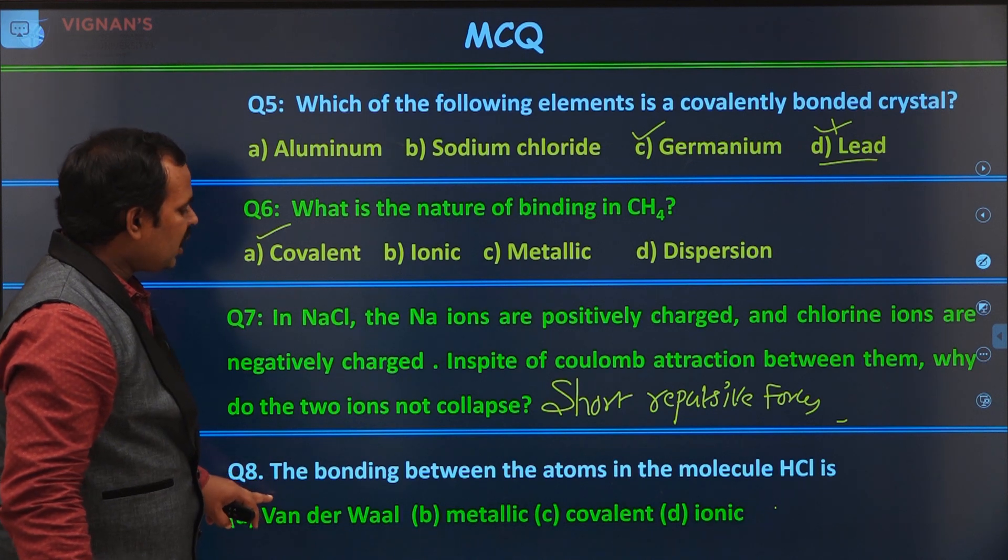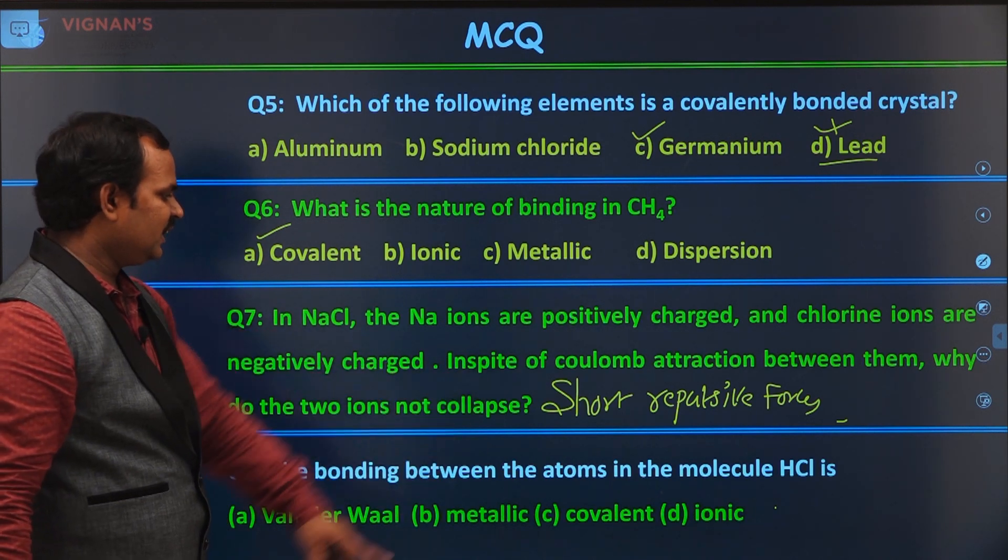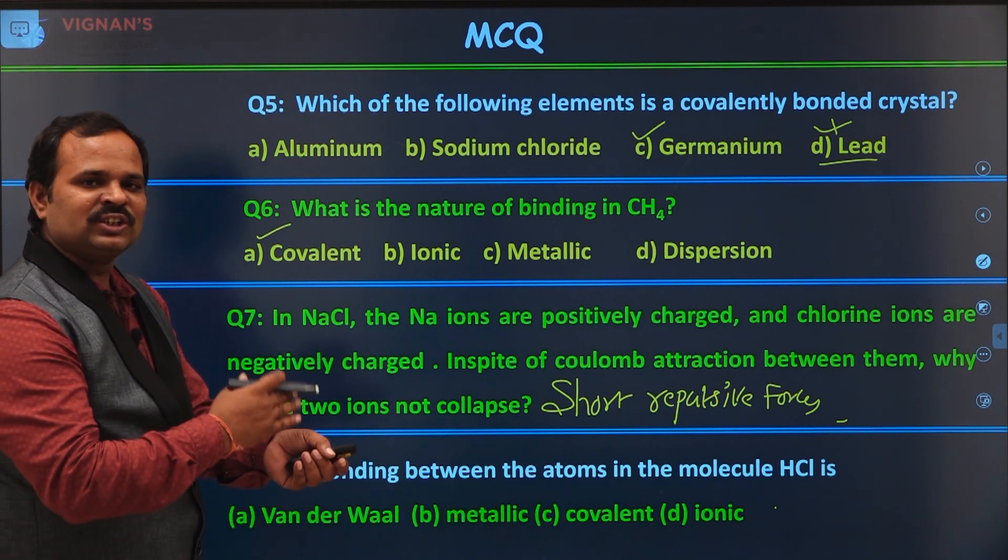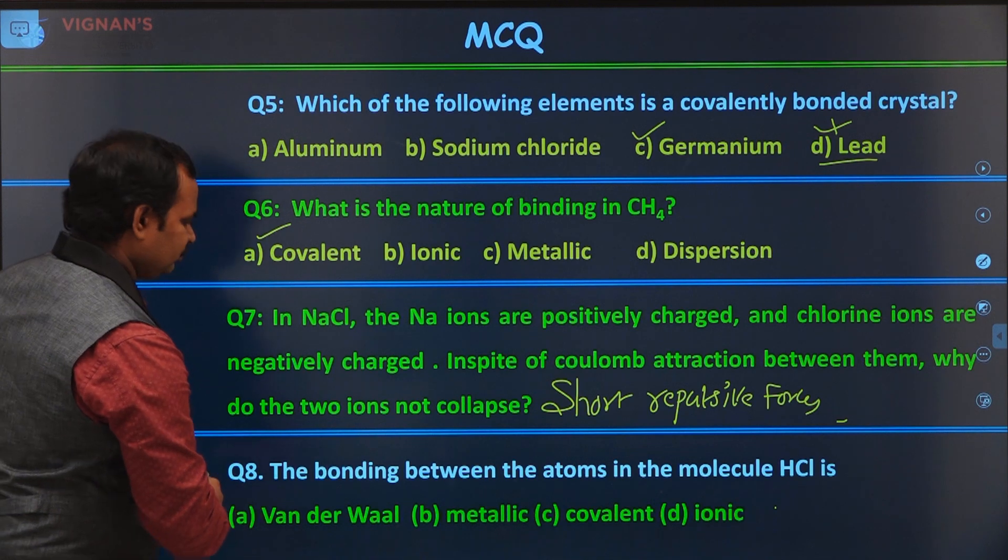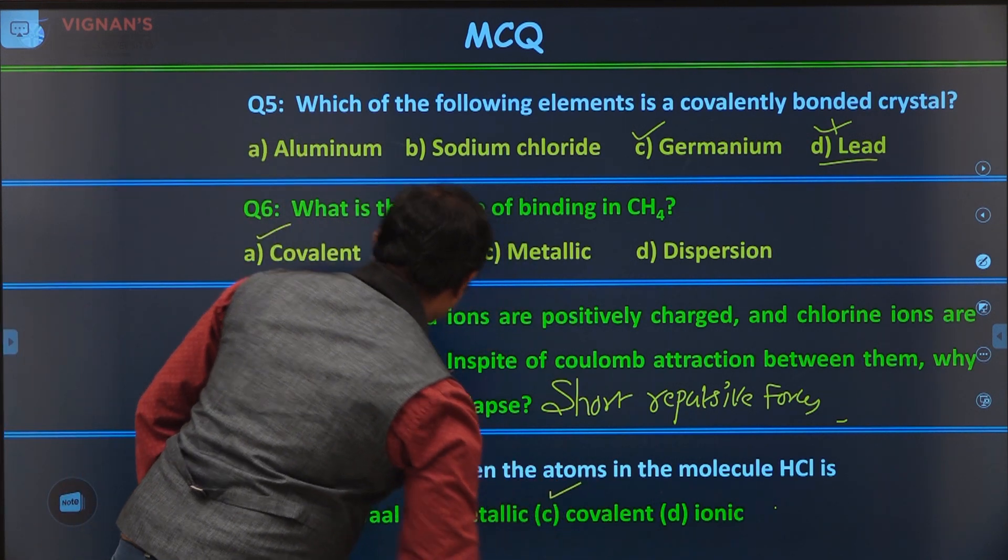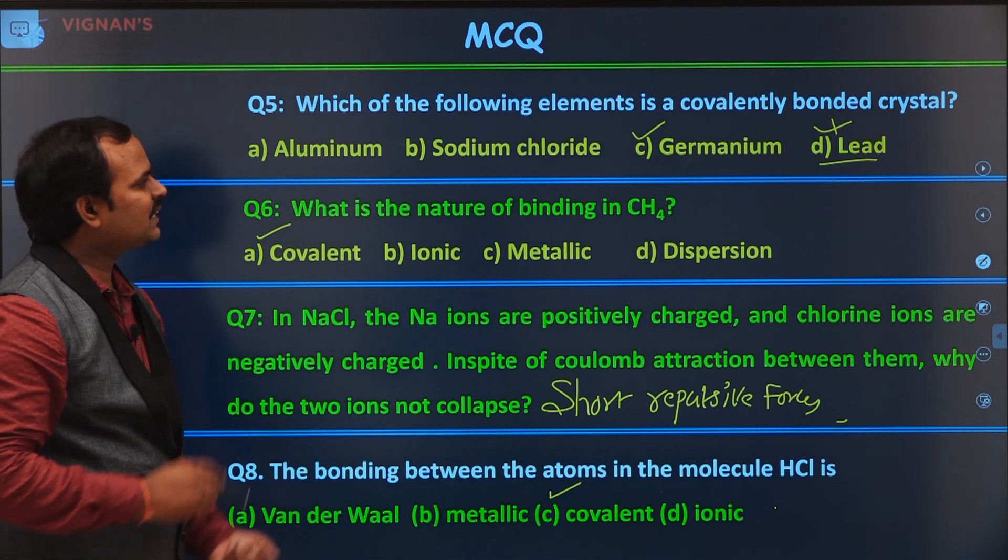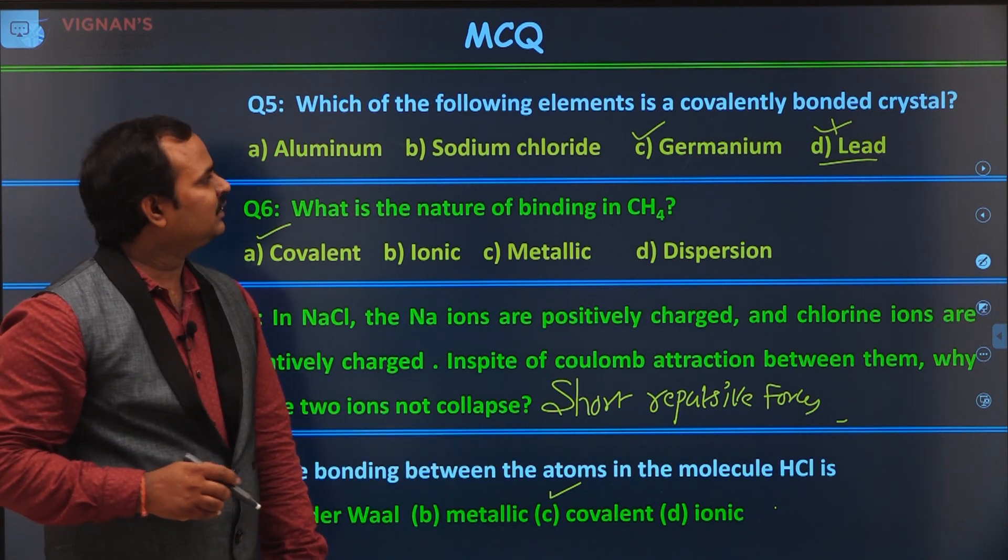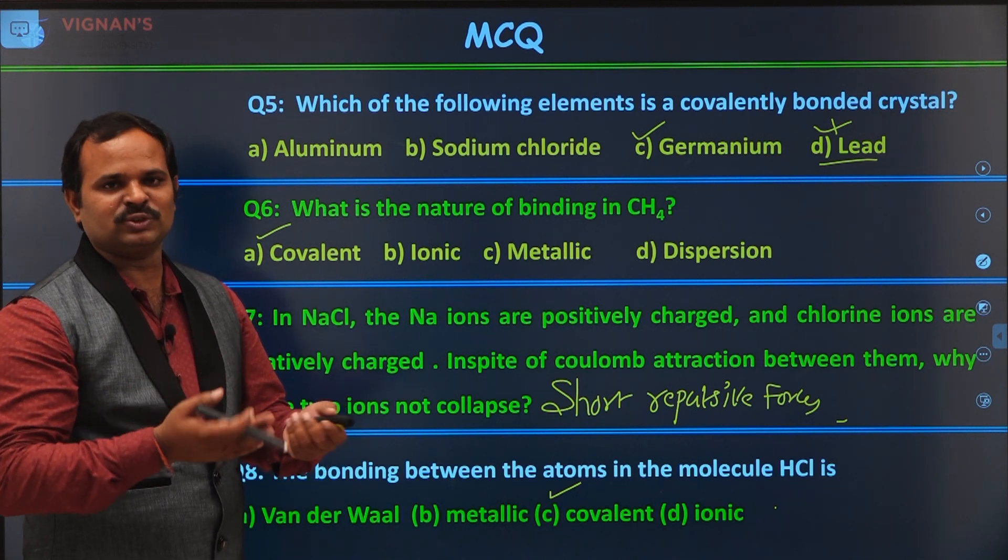The next question is, the bonding between the atoms in a molecule of HCl is. HCl, between hydrogen and chlorine, all these are covalent bonds. This is a covalent bond, not a van der Waals bond, not a metallic bond, not an ionic bond. These are some of the questions on the bonding in solids and interatomic forces.